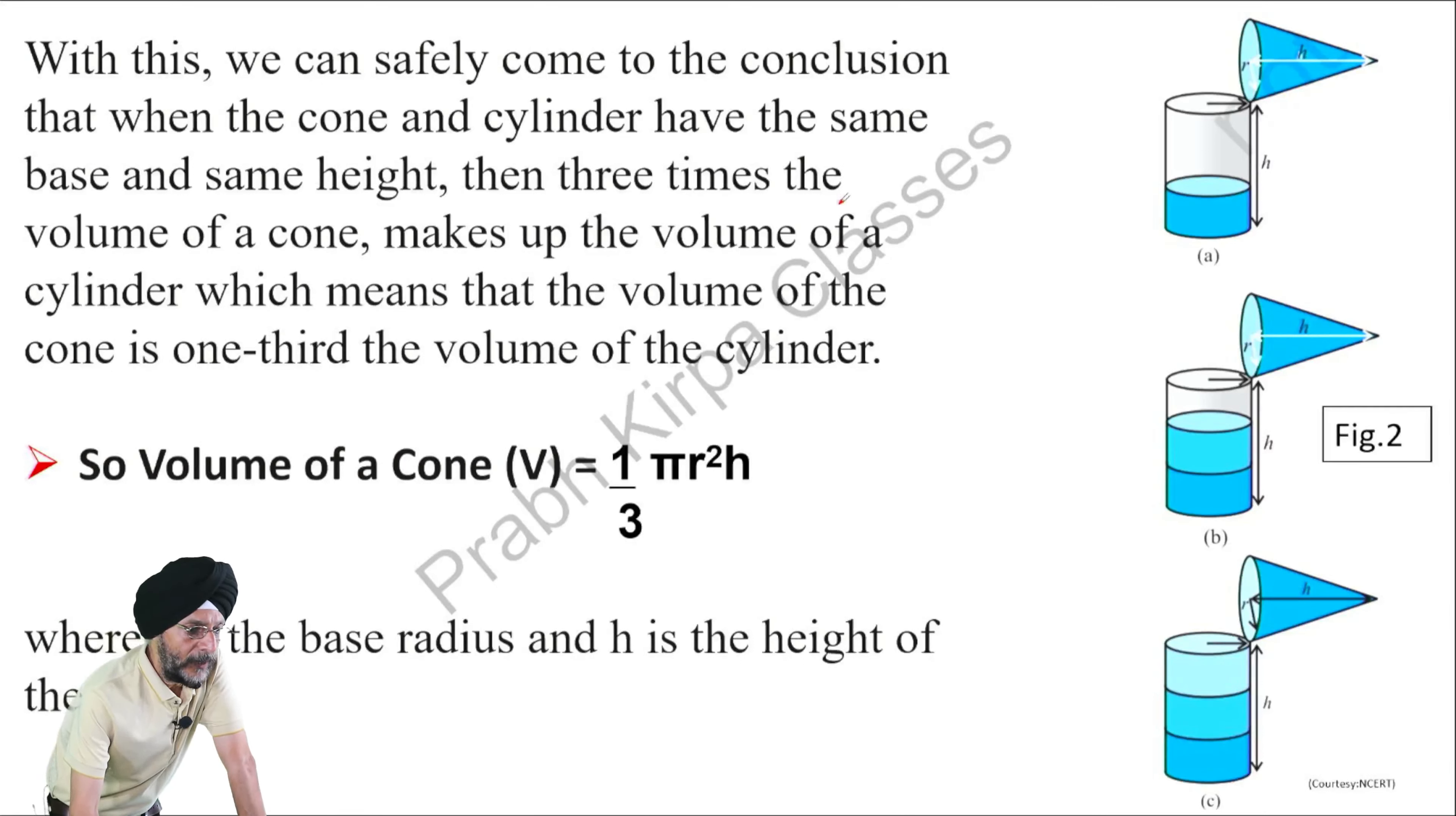We can safely come to the conclusion that when the cone and the cylinder have the same height and have the same base radius, then three times the volume of the cone makes up the volume of the cylinder.